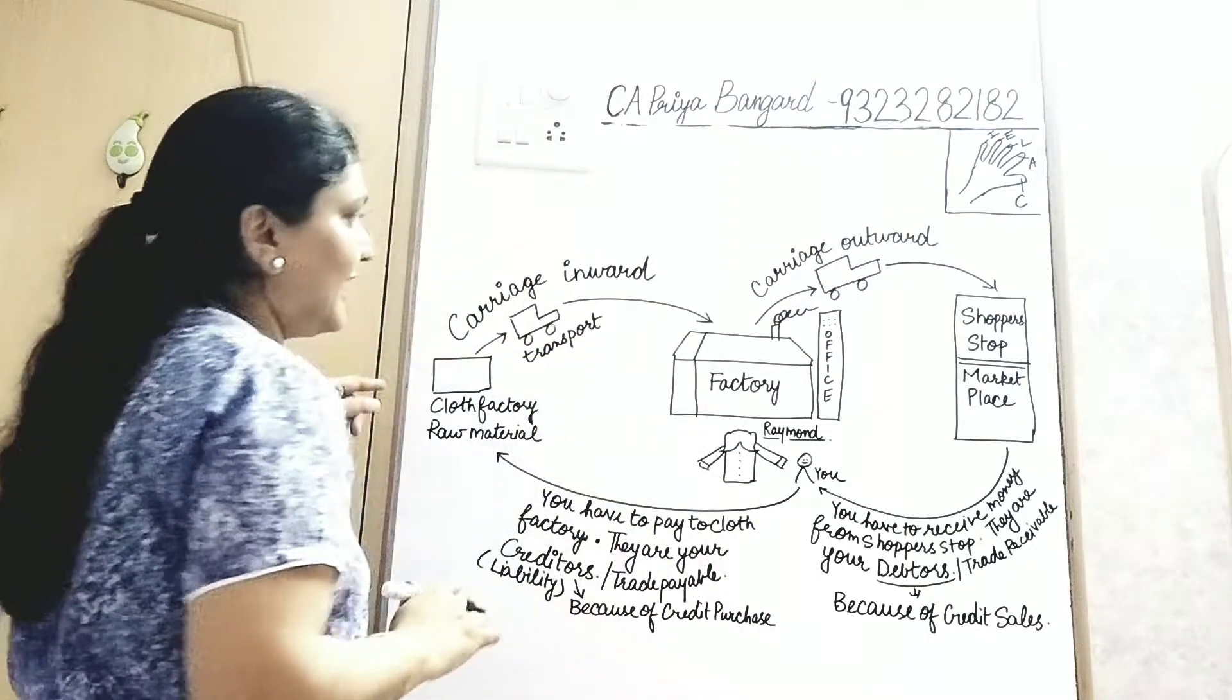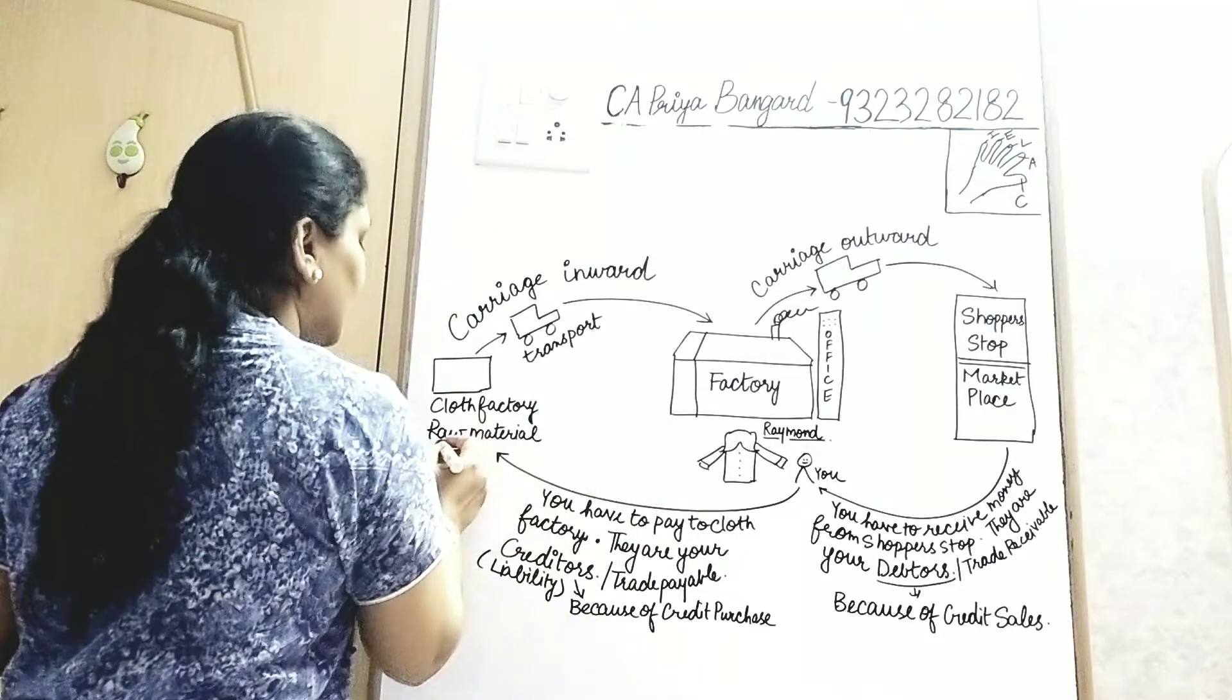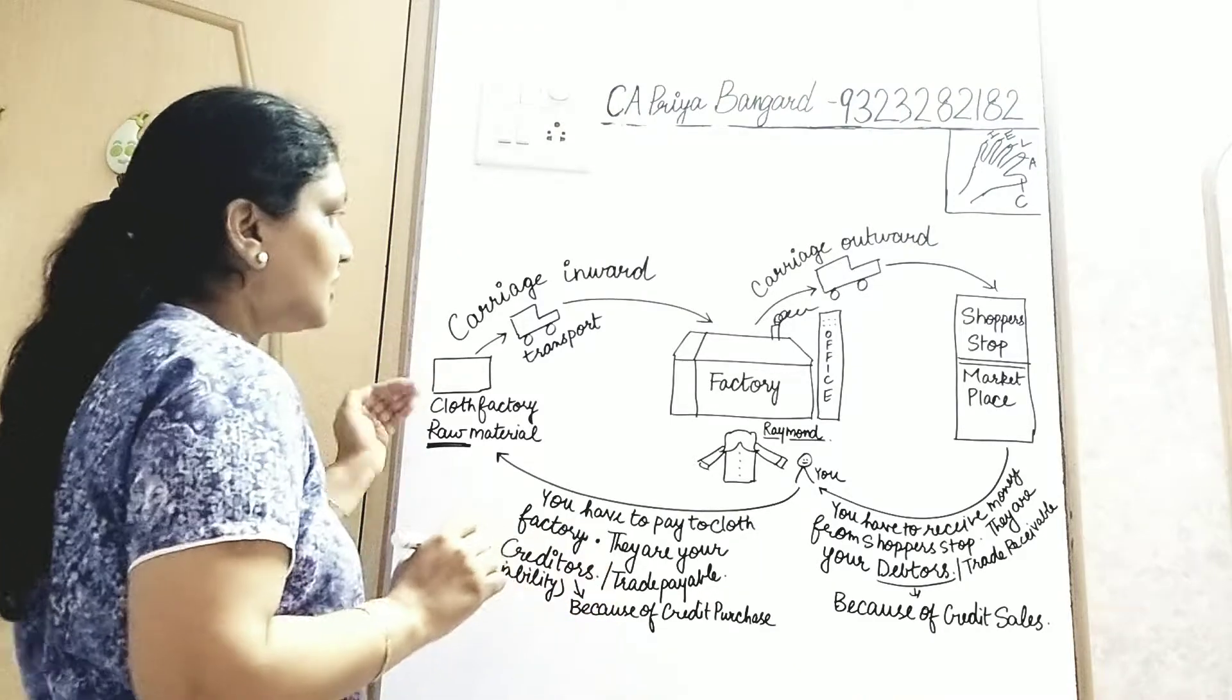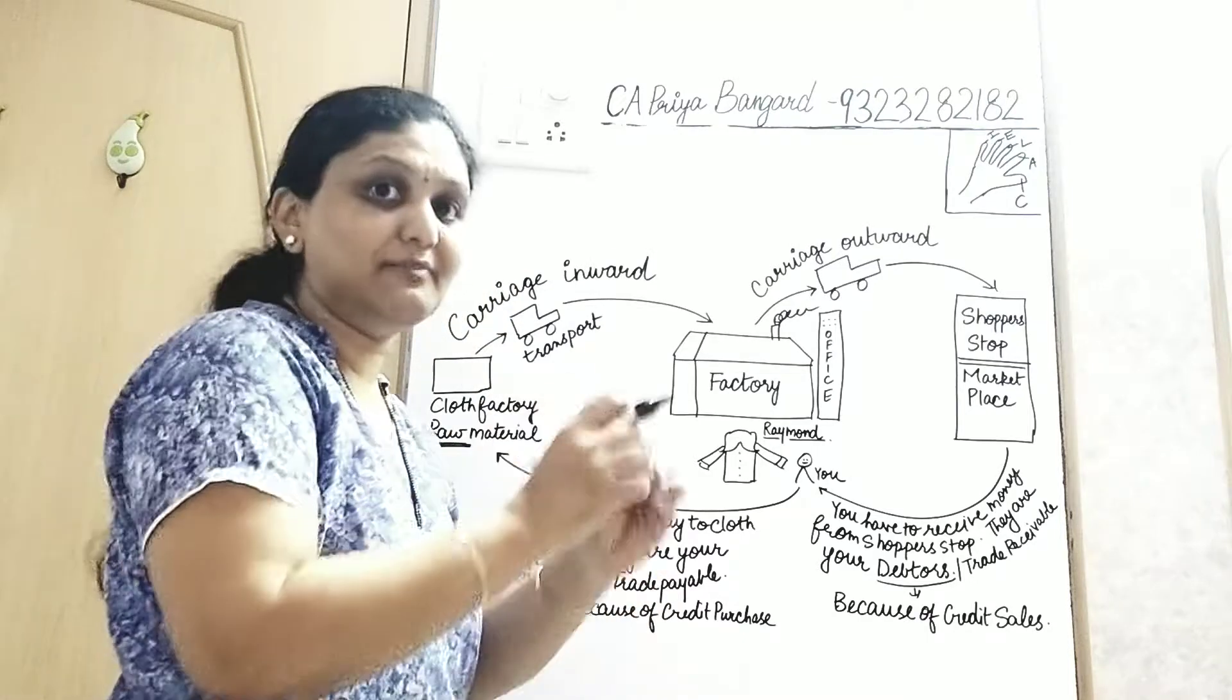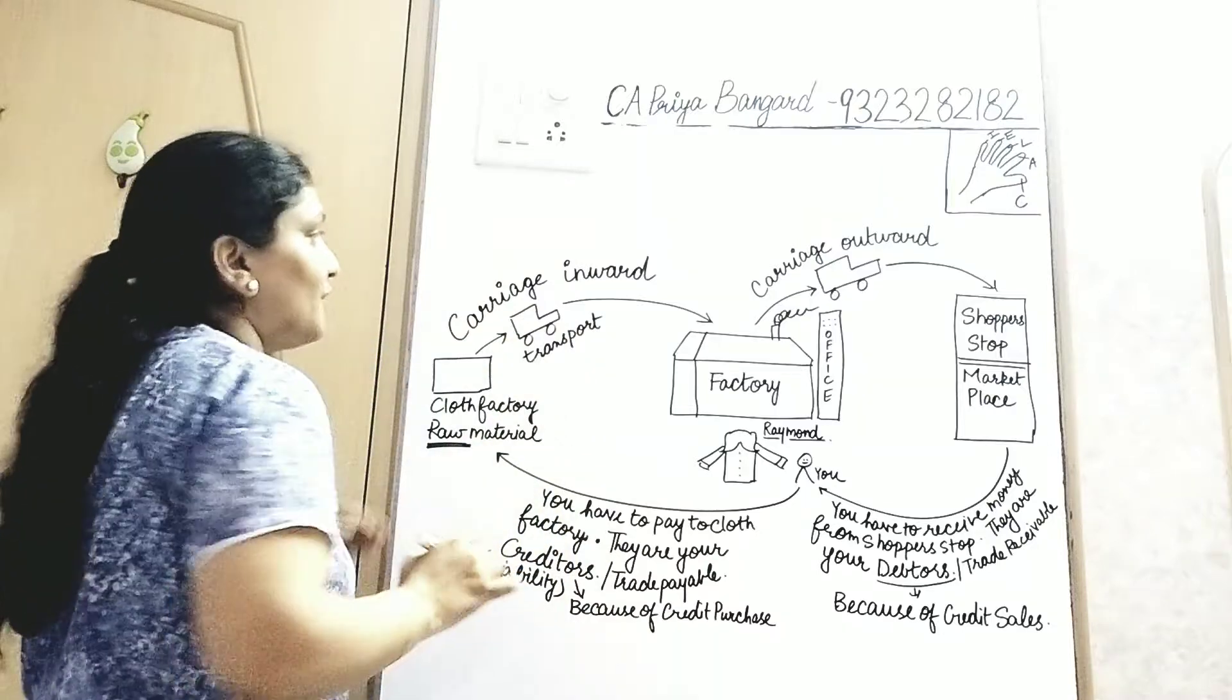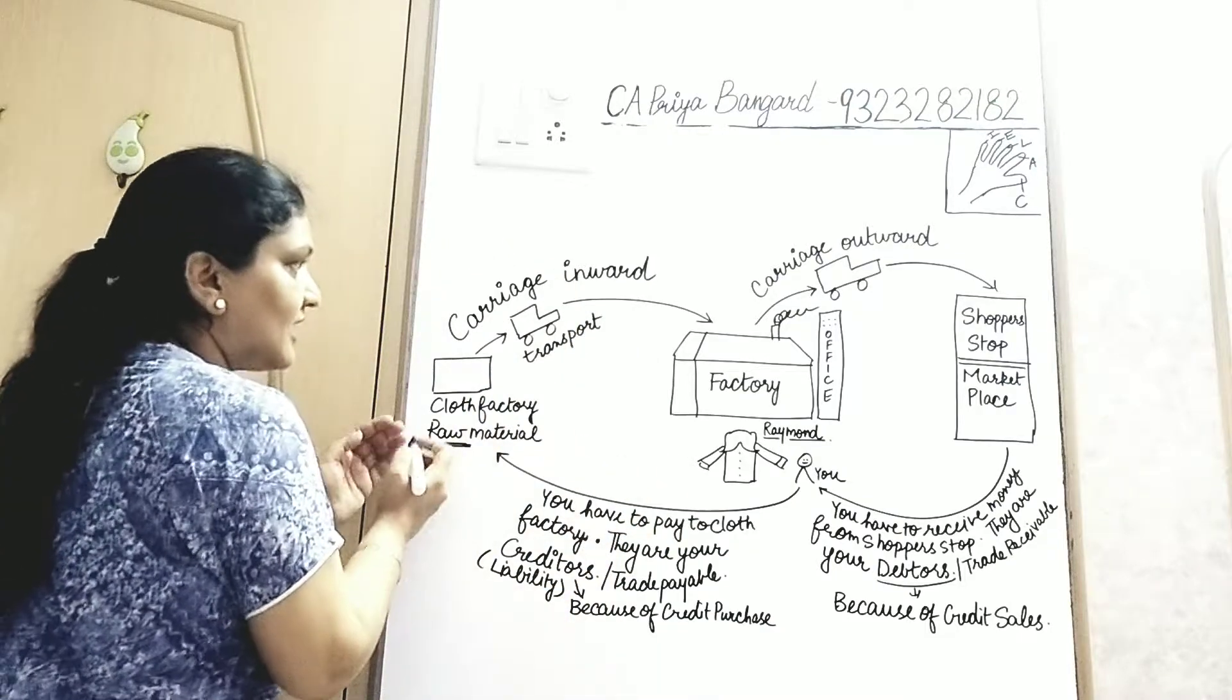You will need cloth as raw material, so you will buy cloth from some other factory. This is your cloth factory. When you are buying cloth, cloth is raw material for you. Now, how will you bring cloth to your factory? Obviously, you will need some van, some truck, something to load in and get the raw material to your own factory.